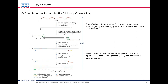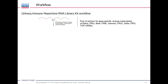The Qiagen kit starts with an RNA library preparation workflow. We start with RNA, convert it to cDNA using a pool of gene-specific primers for reverse transcription of alpha, beta, gamma, and delta TCR mRNAs. There is no need for ribosome reduction or mRNA enrichment — we can start with total RNA from enriched T cell populations, sorted cells, PBMCs, or tumor tissue.